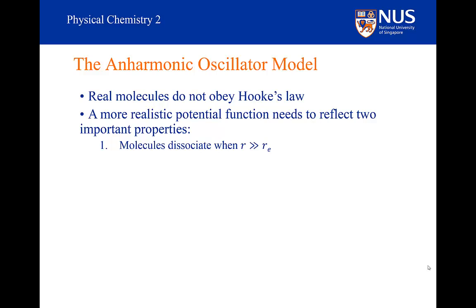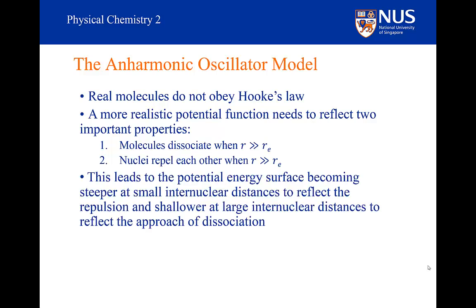One, the molecules dissociate if the bond length is much larger than the equilibrium bond length. And two, the nuclei themselves repel each other when the bond gets much smaller than the equilibrium bond length. So the potential is much steeper than you would predict from the harmonic oscillator at small bond lengths.